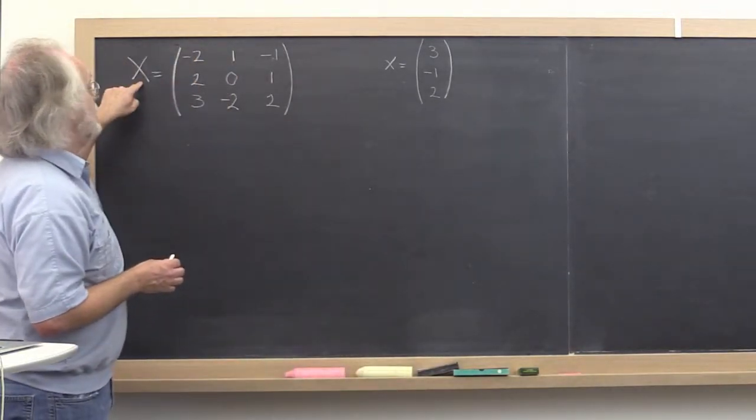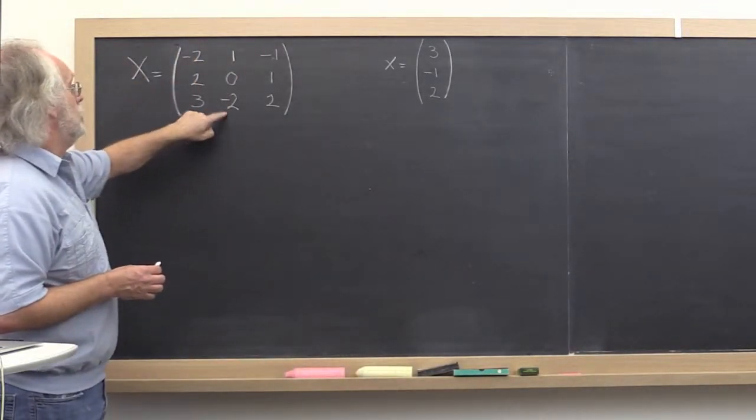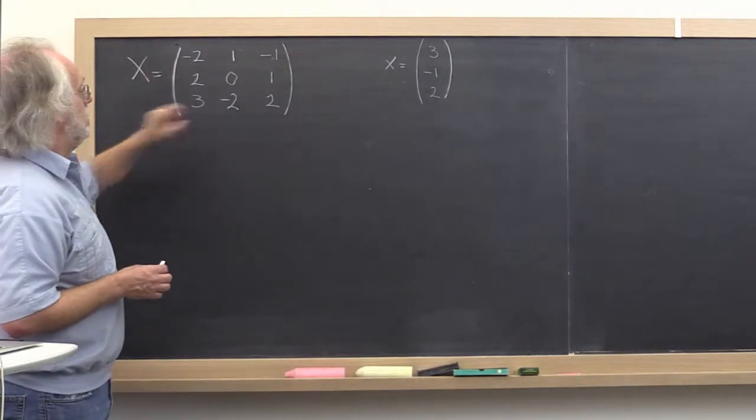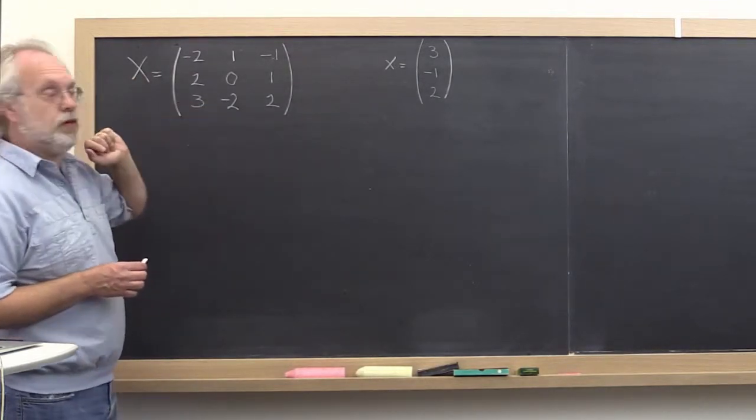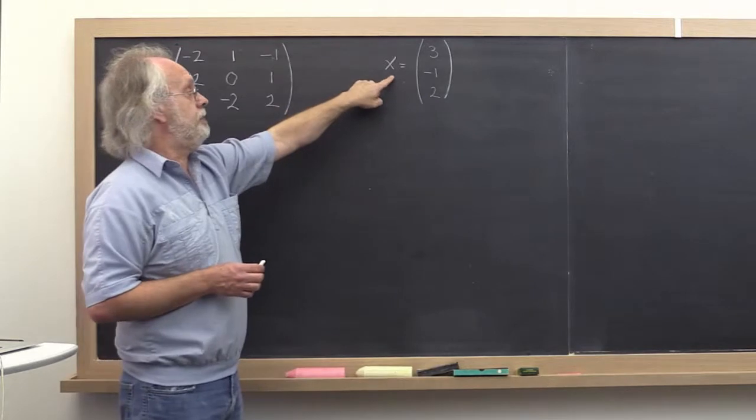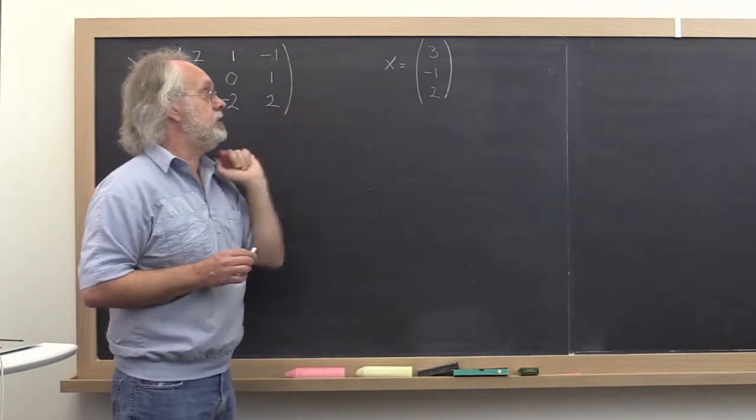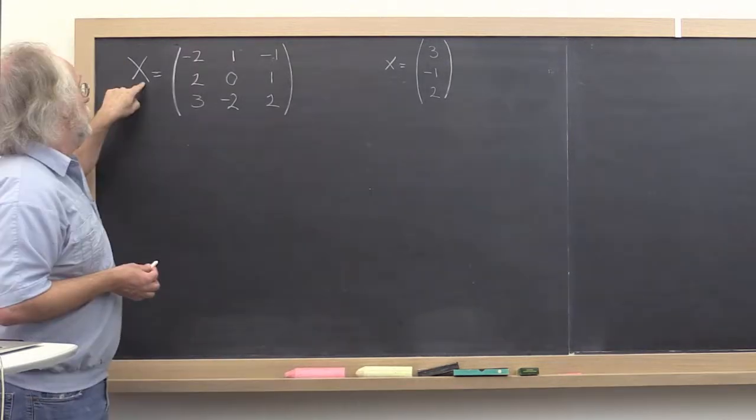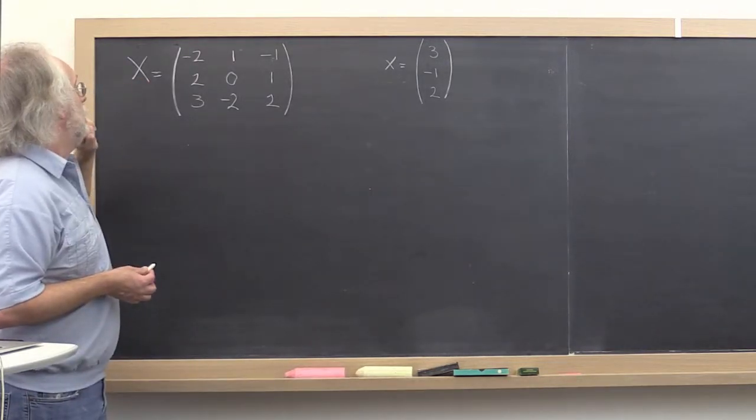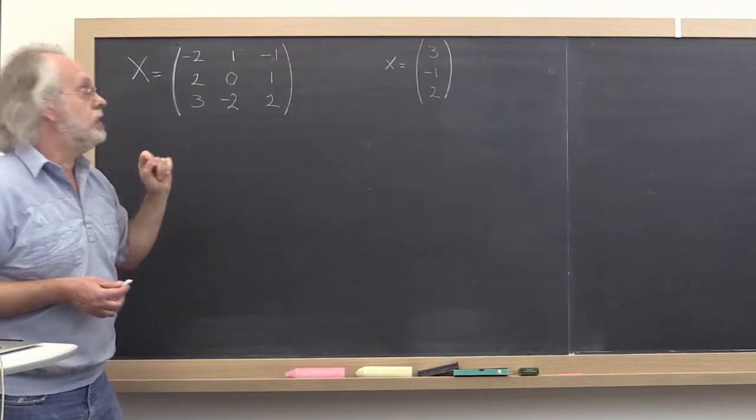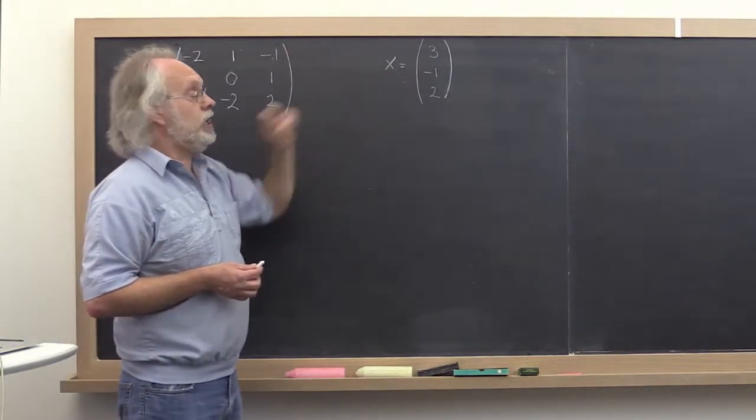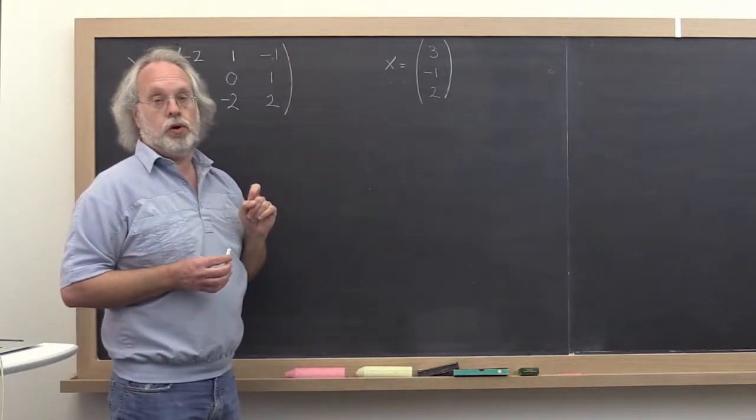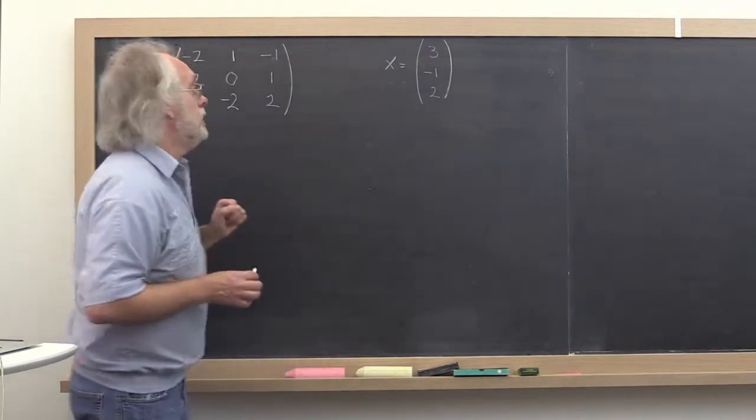Here we have the concrete example of an arbitrary matrix. Let's call it x. I guess it's not arbitrary because it's a specific one. And here we have a vector x instead. And if you look carefully in the notes, what you will notice is that we always use an uppercase letter for the matrix and we use a lowercase letter for a vector.